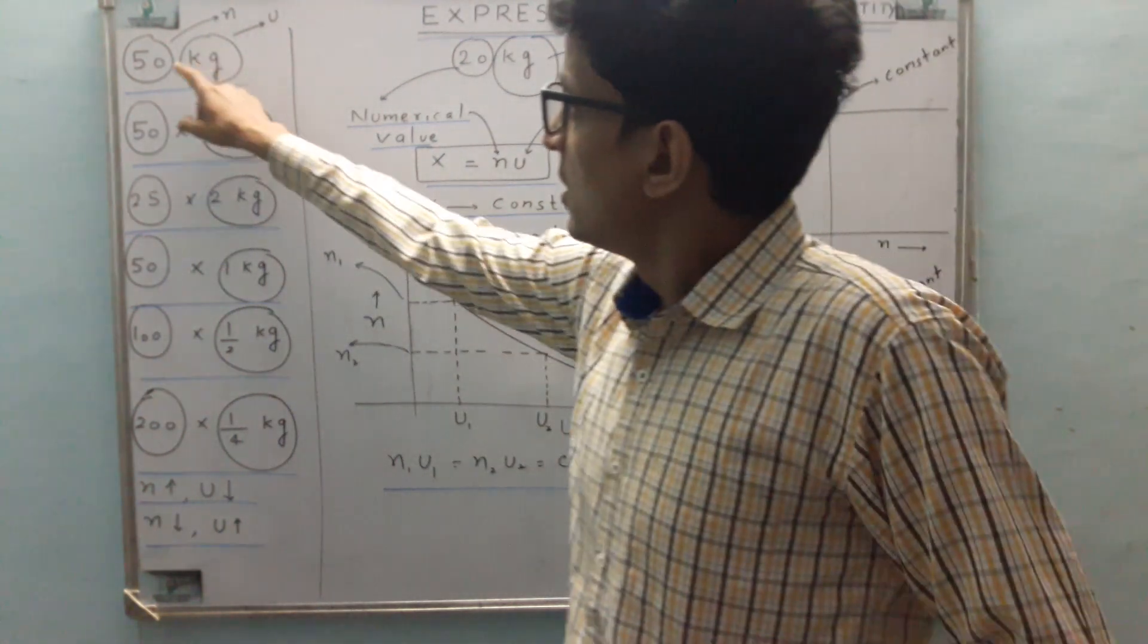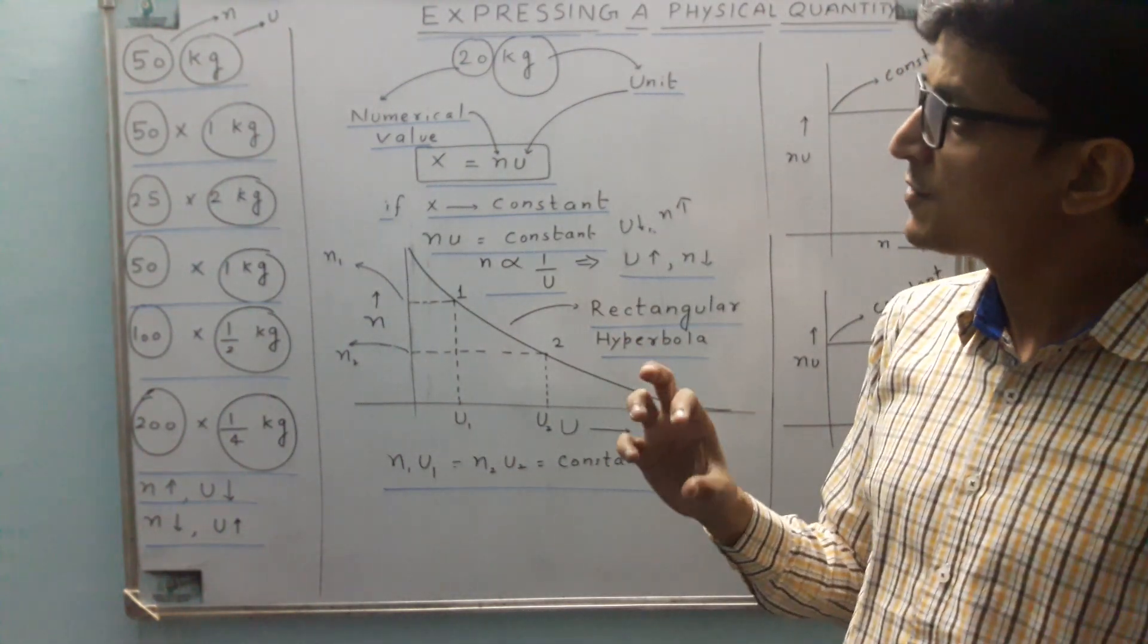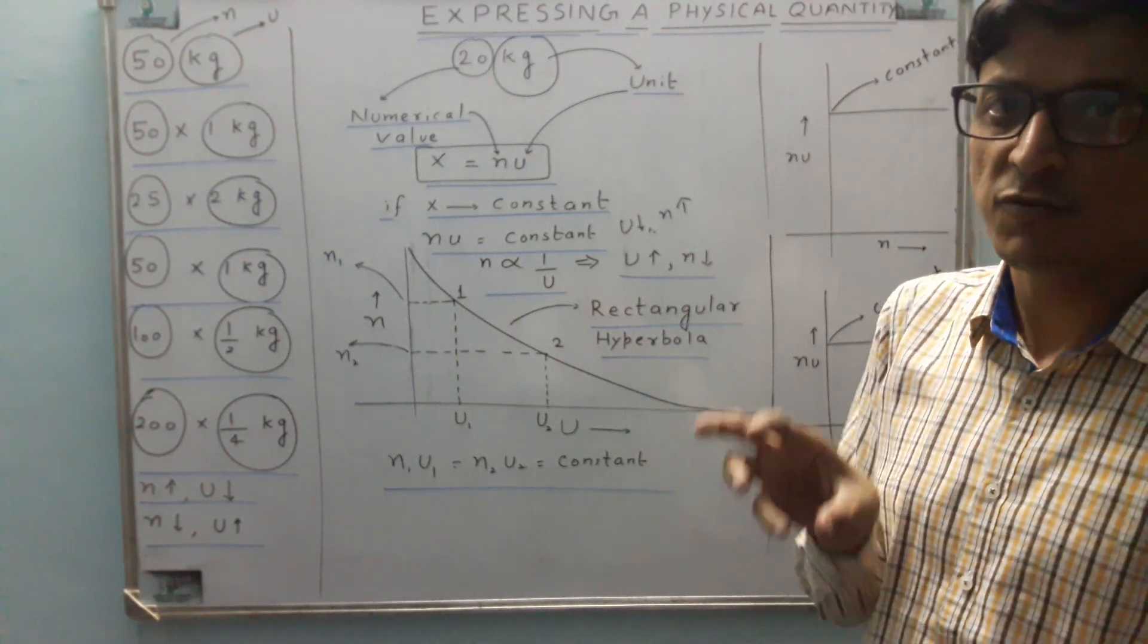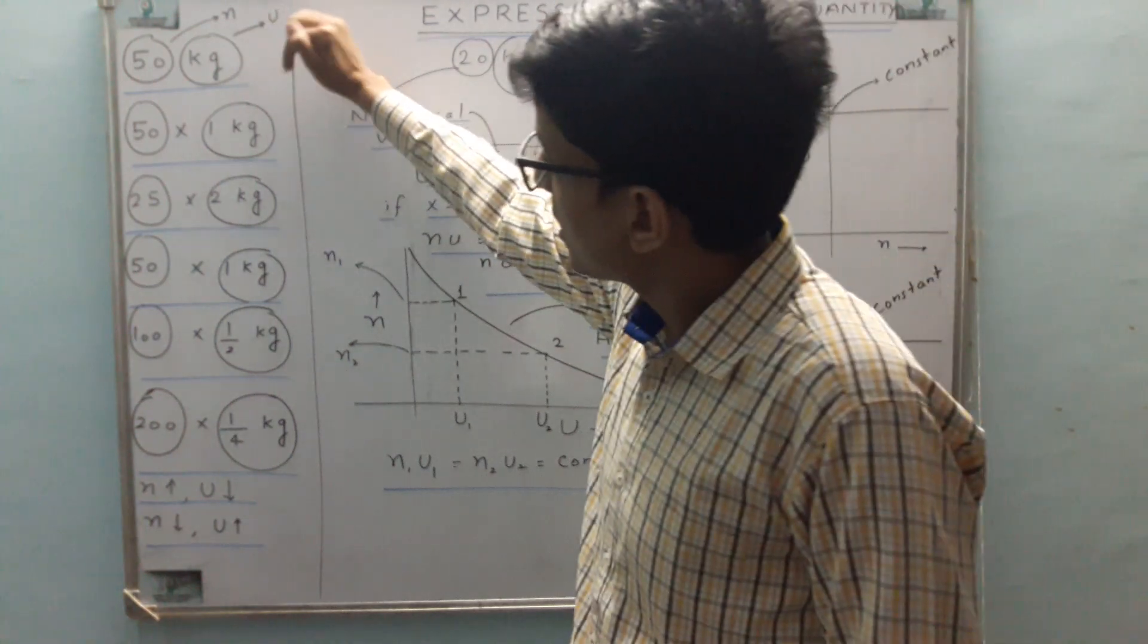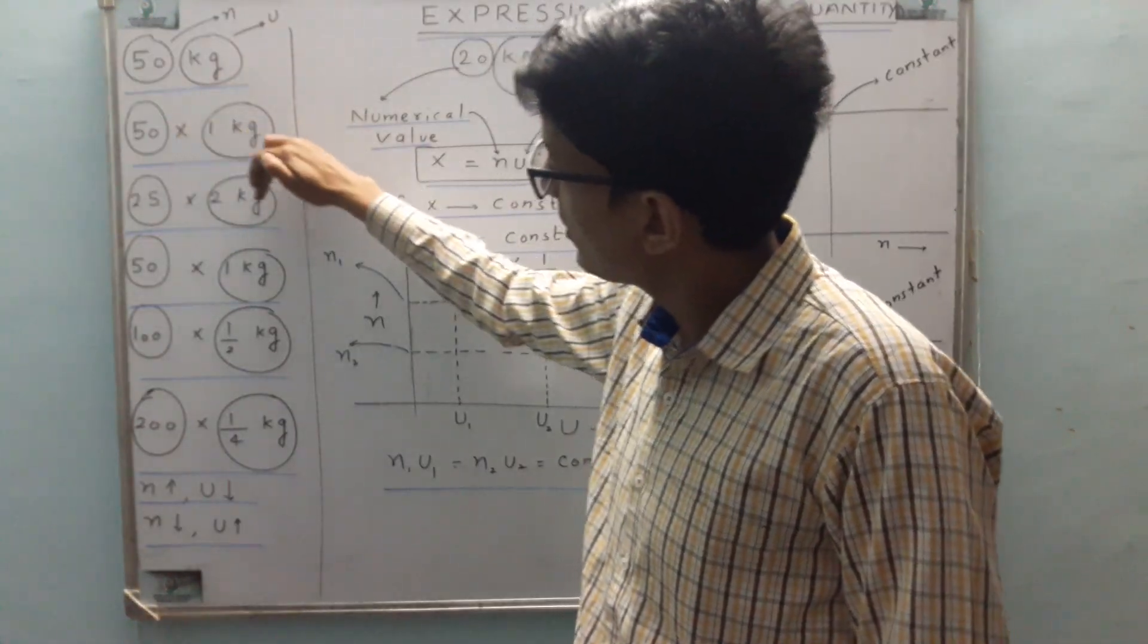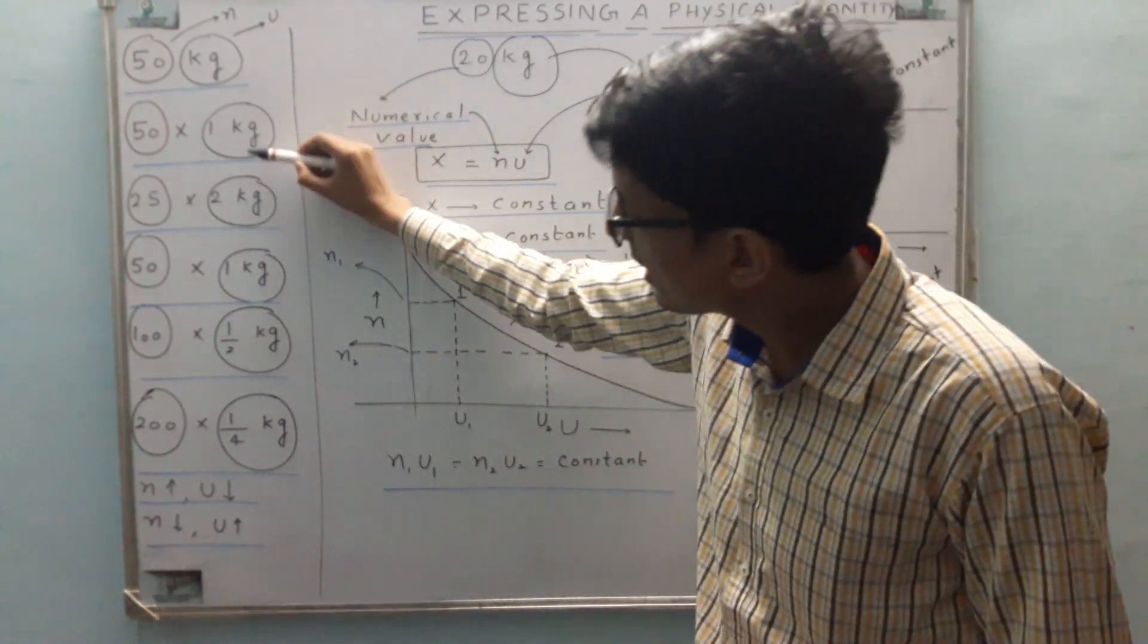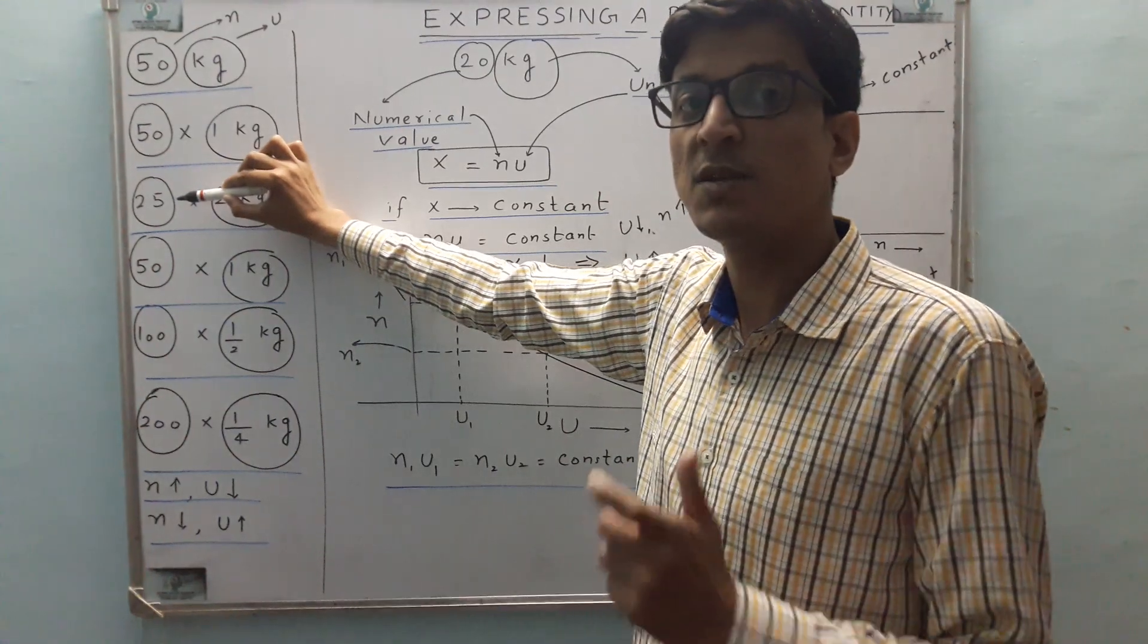Let's look at this matter through another dimension. Suppose we have written 50 kg. Let's see the impact of changing numerical value on the unit for a constant amount of physical quantity. So 50 kg can be written as 50 × 1 kg or 25 × 2 kg. So you see that if I increase the unit size, then numerical value decreases in the same proportion.